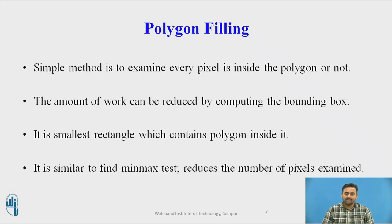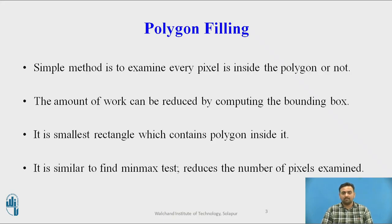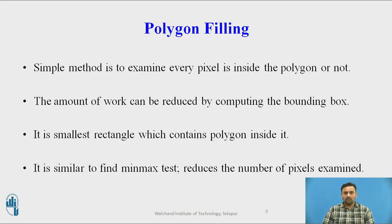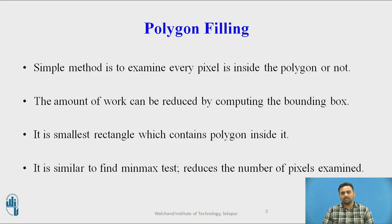The bounding box is the smallest rectangle on the display which contains the polygon inside it. The polygon does not exceed the boundary of the bounding box, and that is why we need to examine only the pixels within the bounding box. In this way, we can reduce the amount of work. The bounding box can be found using the min-max test — that is, the minimum and maximum value of the x coordinate and minimum and maximum value of the y coordinate — using the endpoints of the polygon.